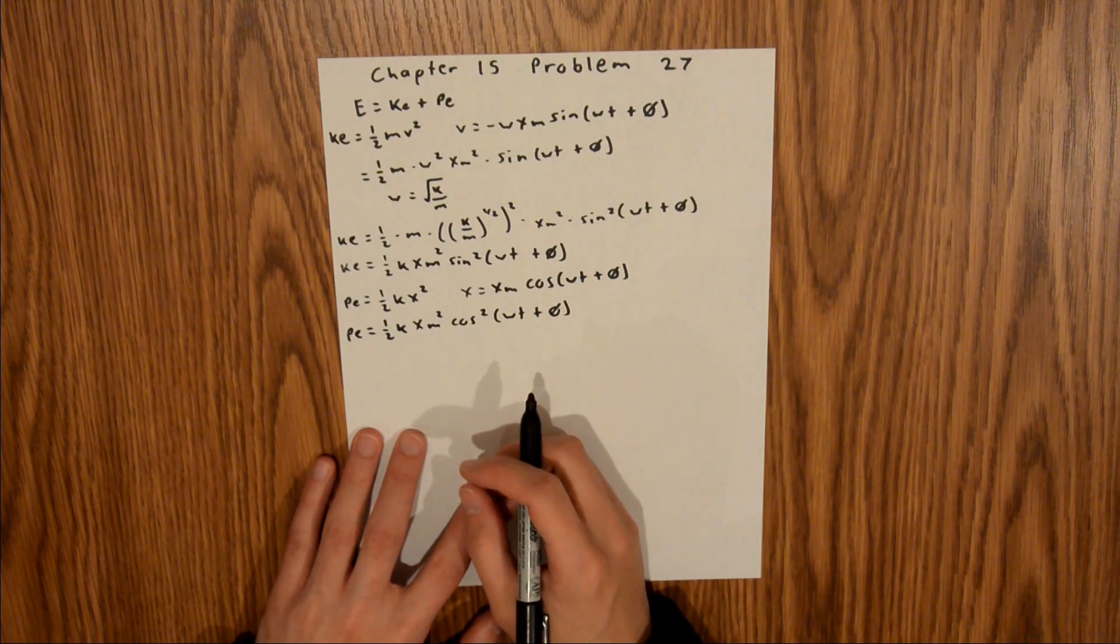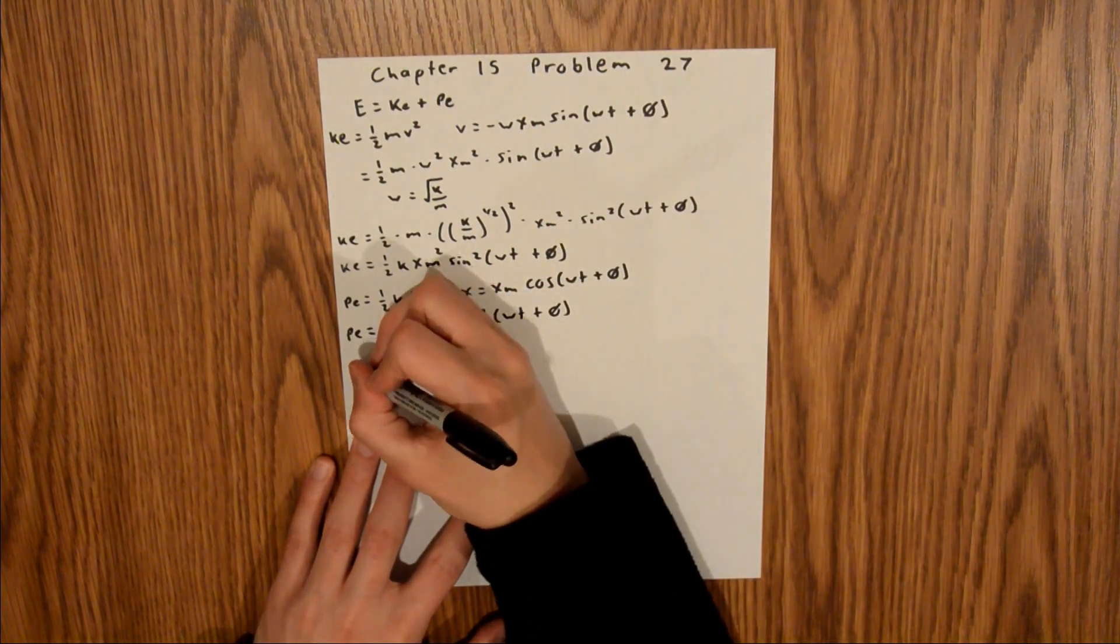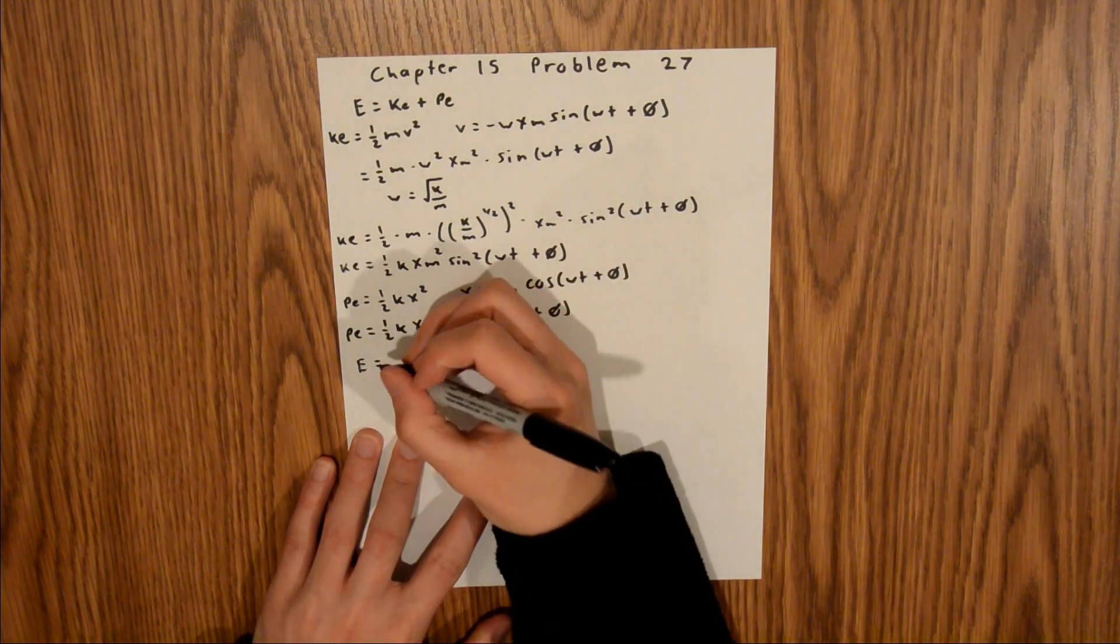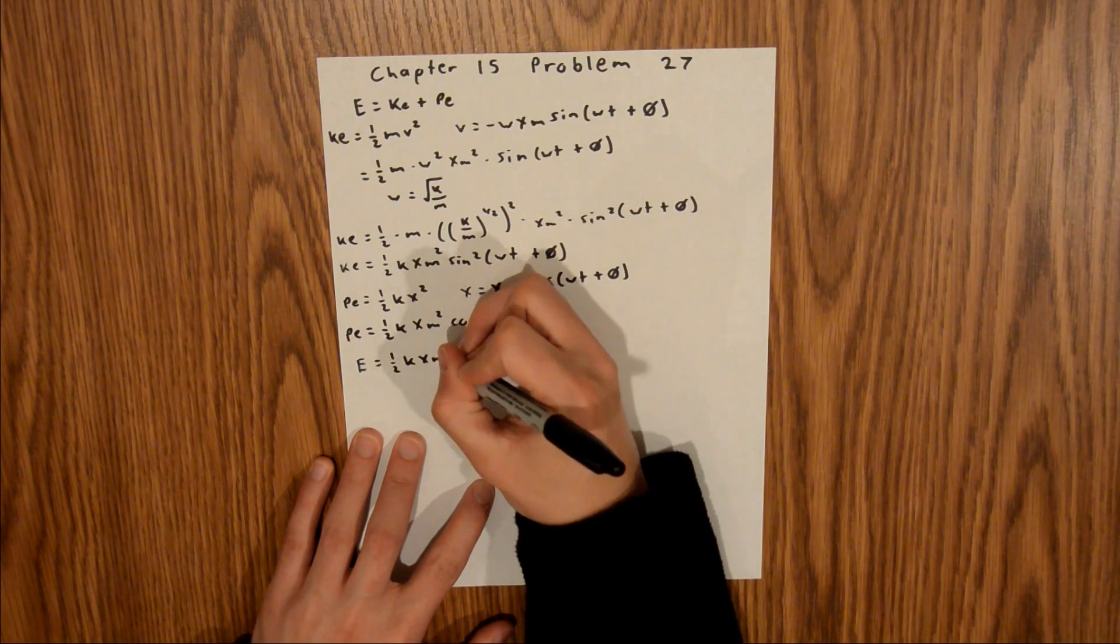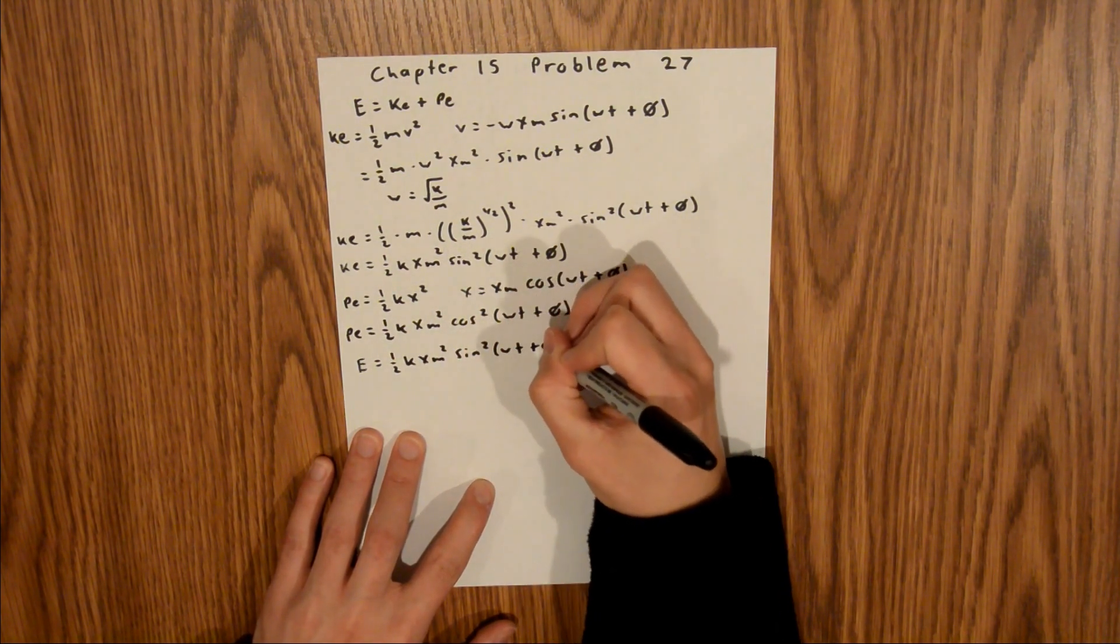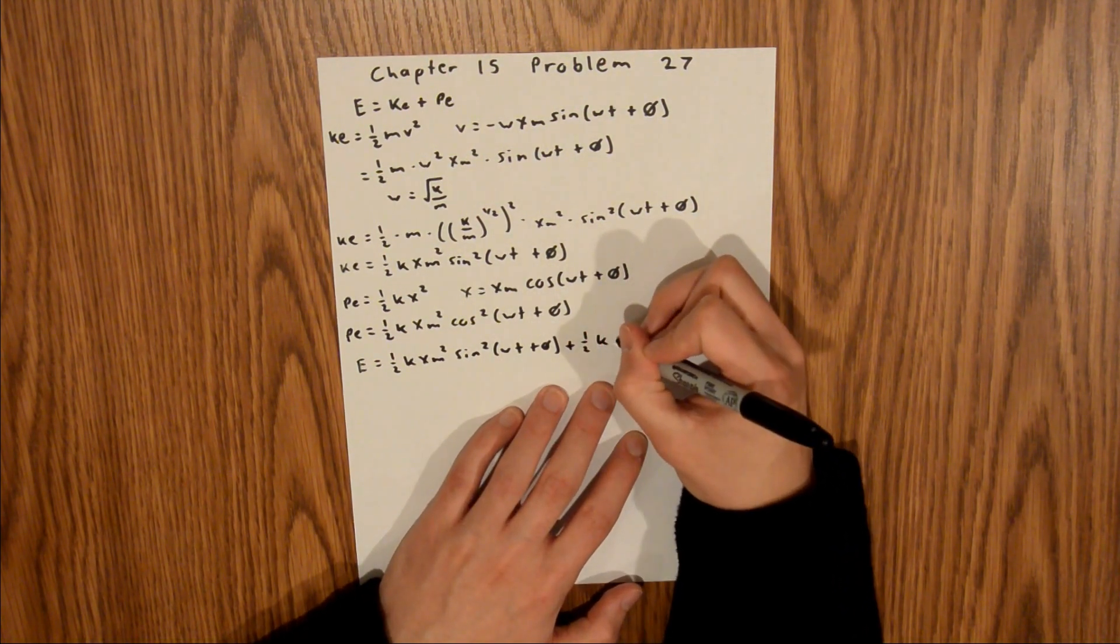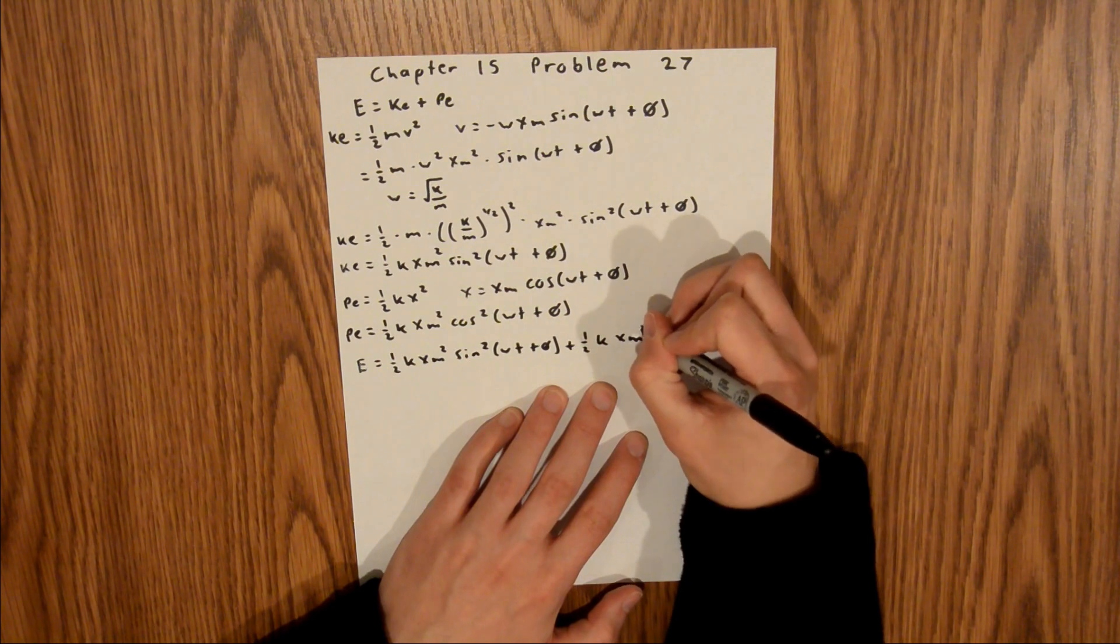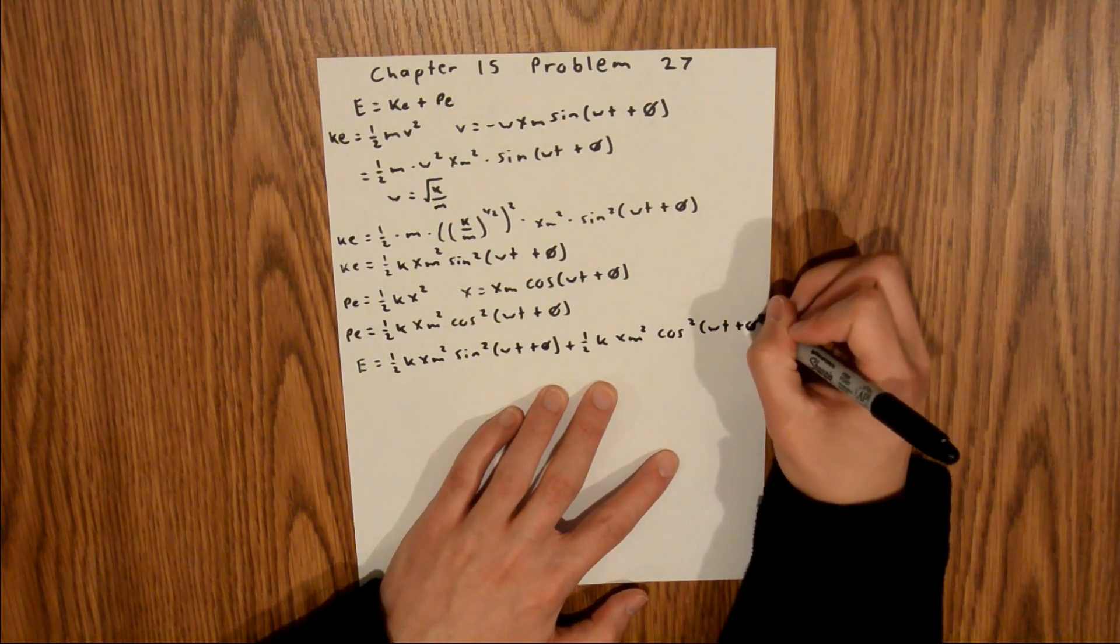And so what we can do is we can add up both terms. And so we have our mechanical energy is equal to 1 half kxm squared sine squared omega t plus phi, plus our PE, which is 1 half kxm squared cosine squared omega t plus phi.